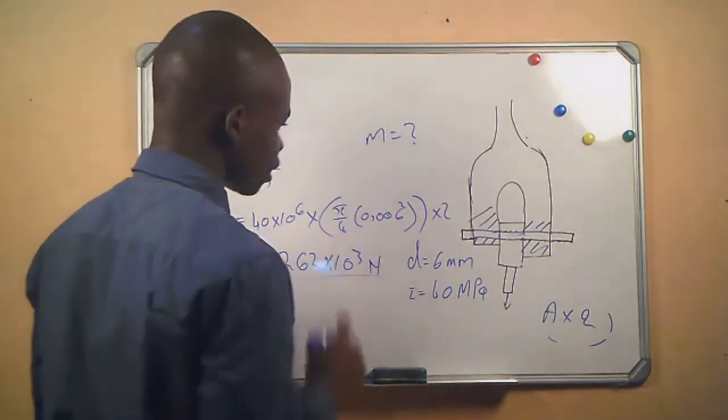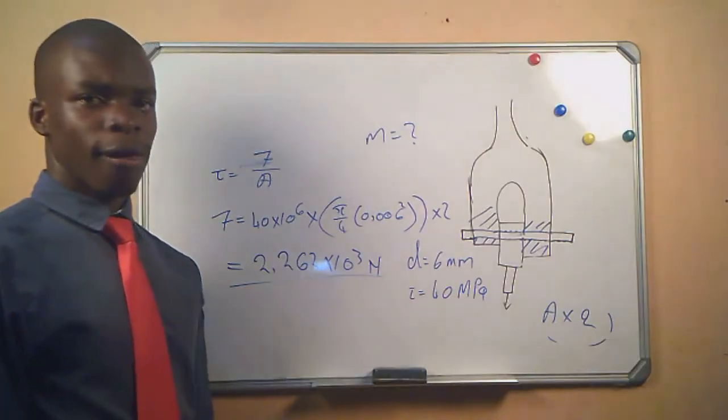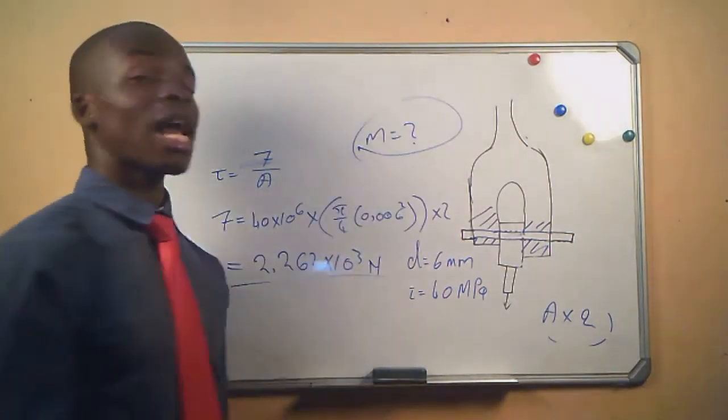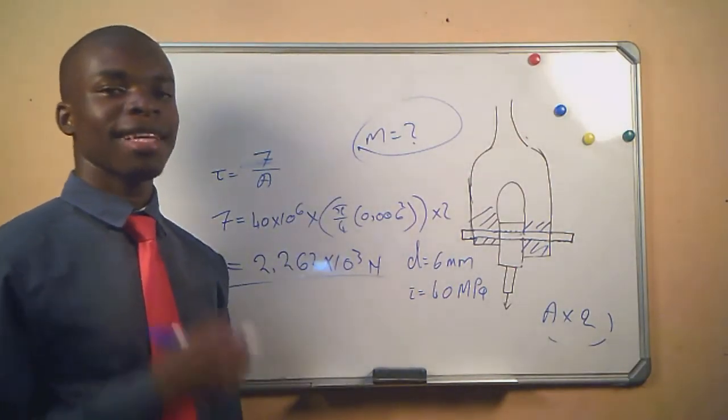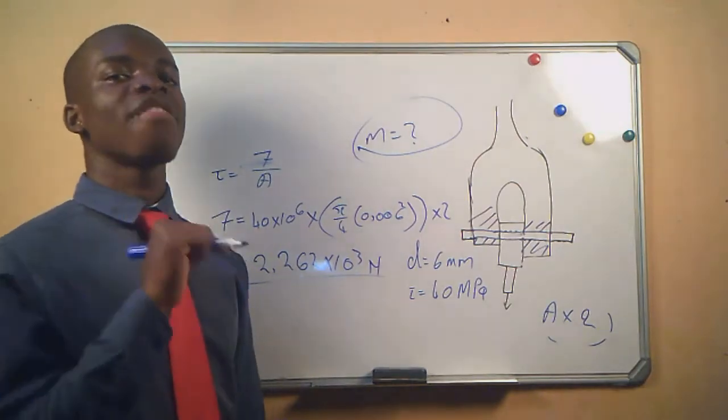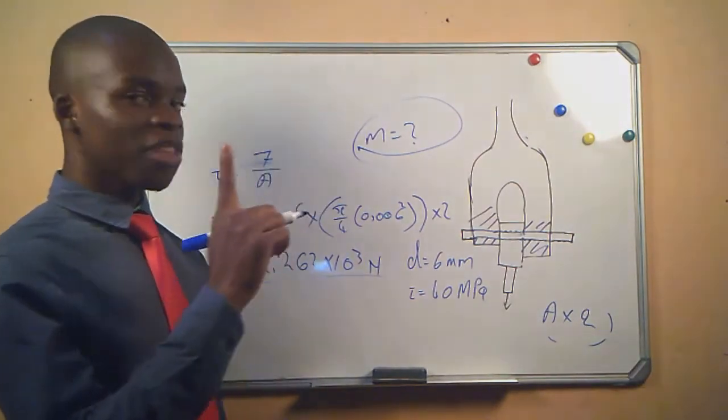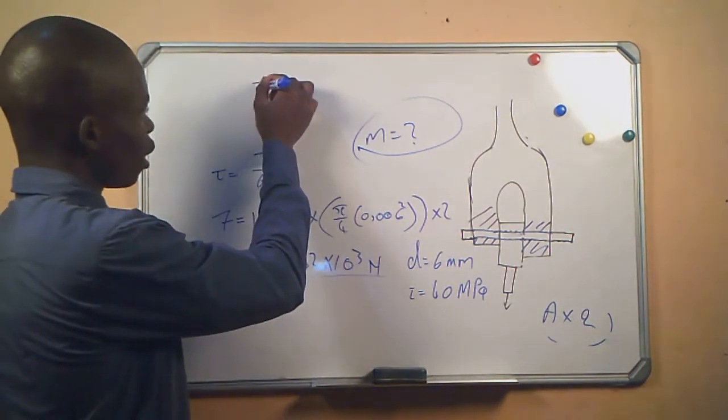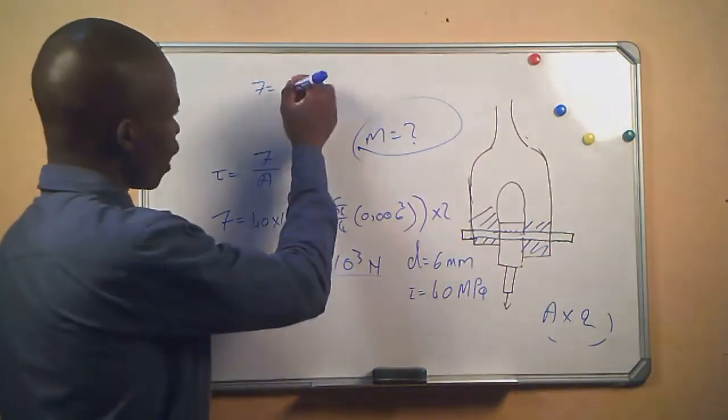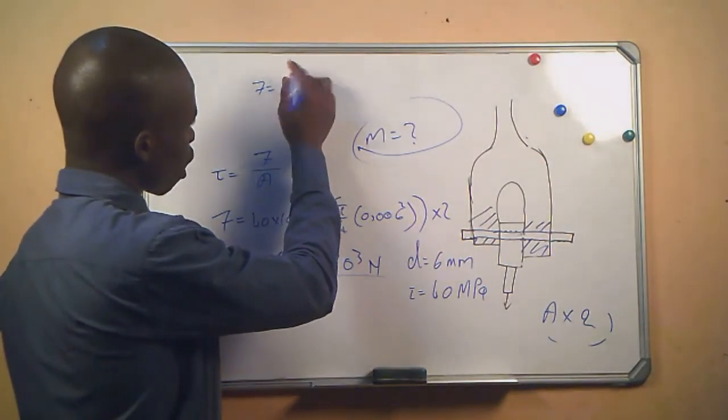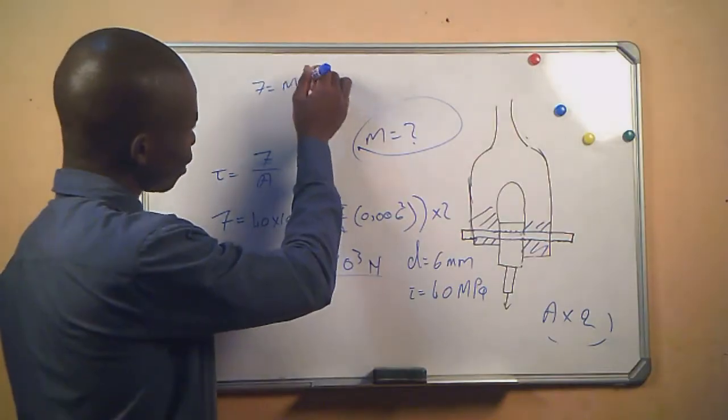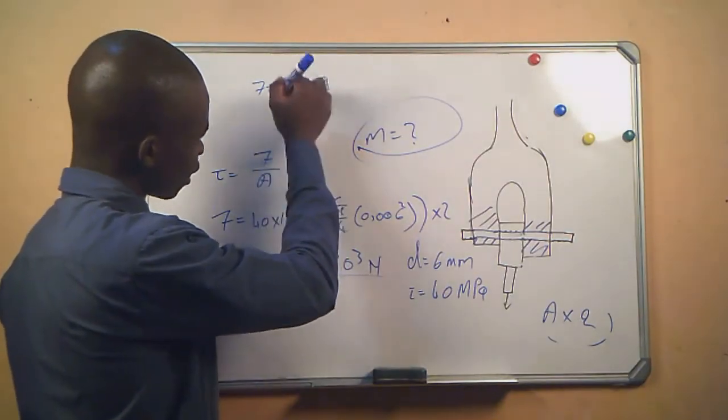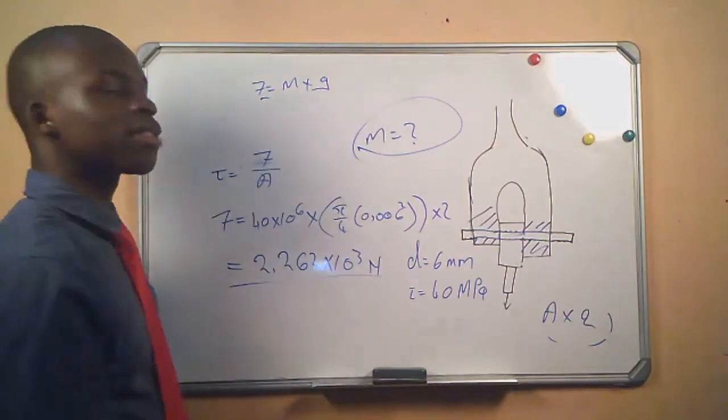They said we must calculate for the mass. One thing we know is that force is made up of mass times the gravitational acceleration, which is g. Do we have the force? Yes. What are we looking for? The mass. Do we have the gravitational acceleration? Always.